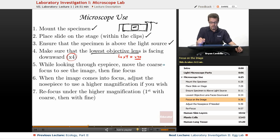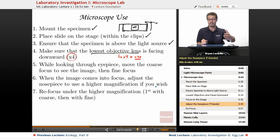While looking through the eyepiece, move the coarse focus to see the image, then the fine focus. You want to start with that coarse focus. That's the one that moves the stage up and down. Then when it's nice and crisp, then move the fine. When the image comes into focus, adjust the nose piece to use a higher magnification if you wish. You can then move to the times 10, to the times 40, and refocus under that higher magnification.